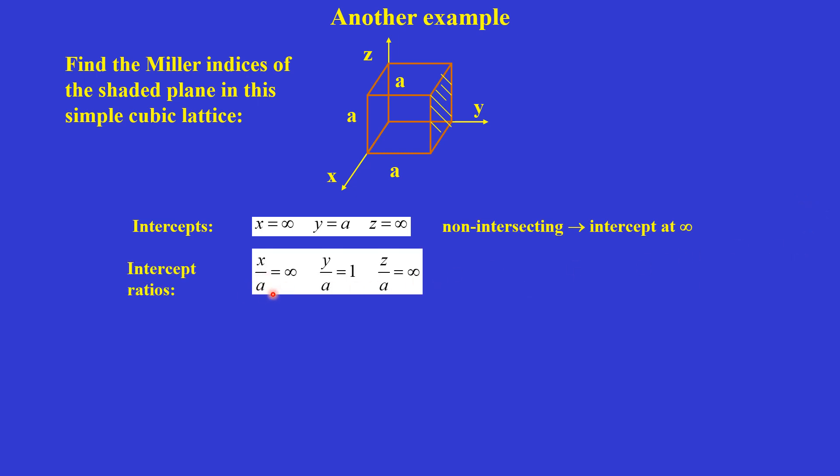We have the intercept ratio: infinity, 1, infinity. If we take the reciprocal of infinity, it is 0. Reciprocal of 1 is 1. Reciprocal of infinity is 0. So we have 0, 1, 0, which is already in integer form. So we don't need to multiply by an integer. This is the 010 plane.